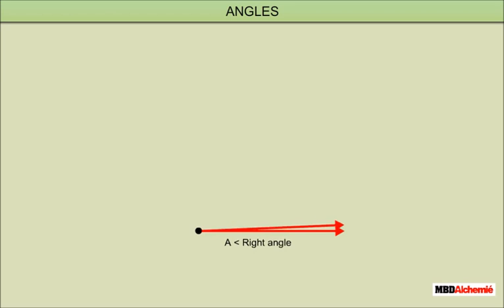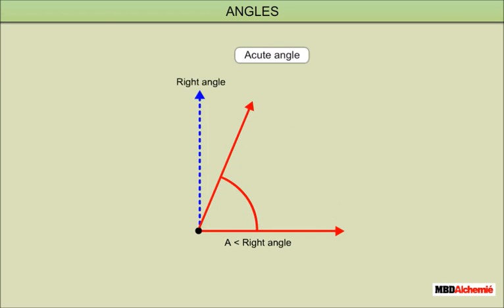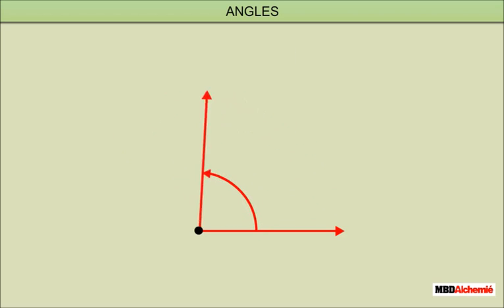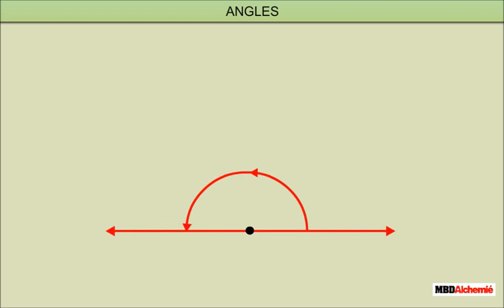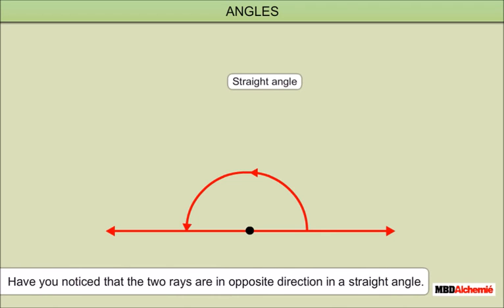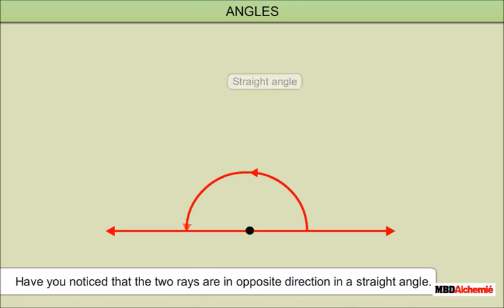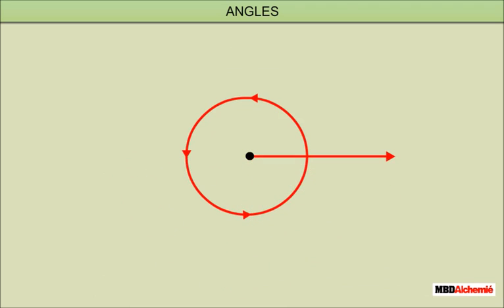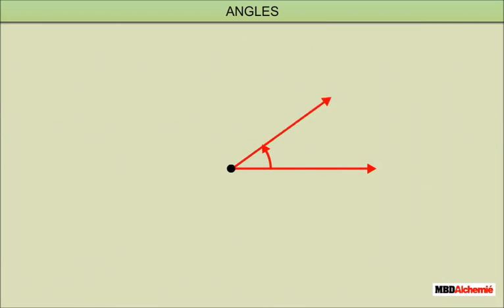An angle smaller than a right angle is called an acute angle. An angle bigger than a right angle is called an obtuse angle. When the revolving arm takes a half turn, the angle formed is called a straight angle — the two rays are in opposite directions. An angle bigger than a straight angle is called a reflex angle. A complete turn is called a revolution; in one revolution, the ray returns to its initial position.